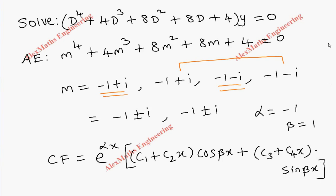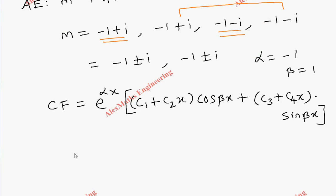We have to replace the values of alpha and beta. So e^(-x)[(c1 + c2x)cos x + (c3 + c4x)sin x].